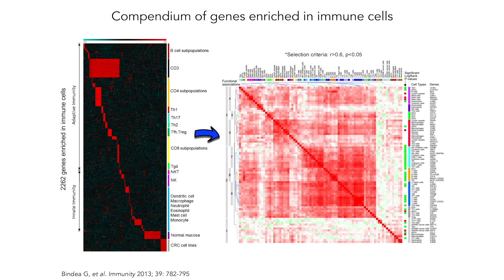In order to do this, we first had to gather all expression profiles from purified immune cells — for CD3 cells, CD4 cells, and all the subsets. The genes expressed in normal mucosa and in colorectal cancer cell lines are used, and we use these expression profiles to derive TILs from bulk RNA expression data.